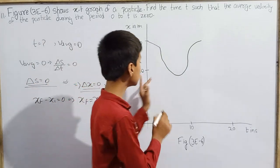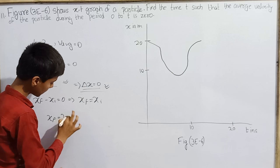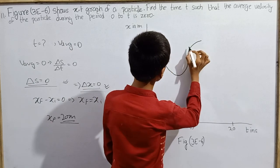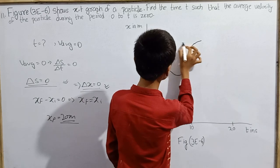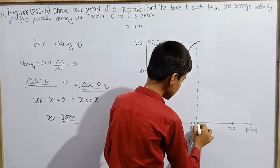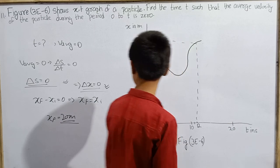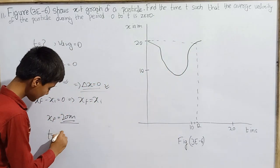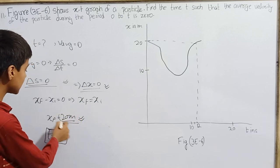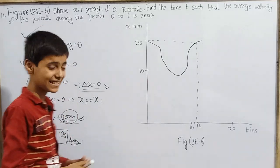X_final equals X_initial at what instant? From the figure, initially x is 20 meters, so the final x must also be 20 meters. Looking at the graph, the particle returns to 20 meters at t equals 12 seconds. So on that point, the particle's average velocity is 0.